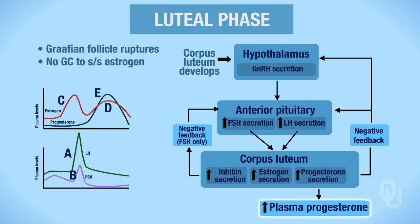So how do we turn off this system? We're going to turn off this system using negative feedback. When we turn off the system, we're going to turn off both FSH and LH, as well as gonadotropin-releasing hormone. That concludes the regulation of hormone secretion during the luteal phase.